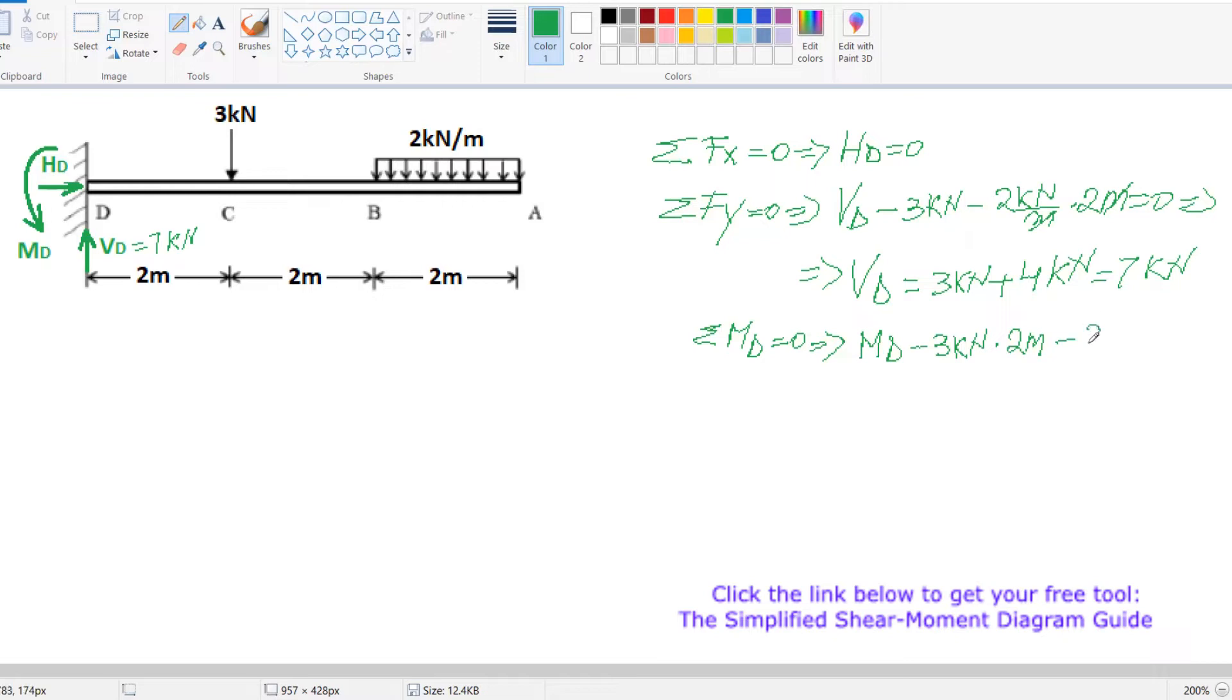Our uniformly distributed load is 2 kN per meter times 2 meters. That's the resultant, and the arm is 5 meters equals zero. From here our moment MD equals 6 kN plus 20. Oh wait, 6 kN plus 20 equals 26 kN meters. MD equals 26 kN meters.